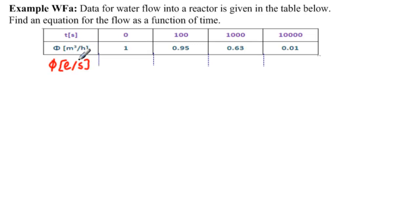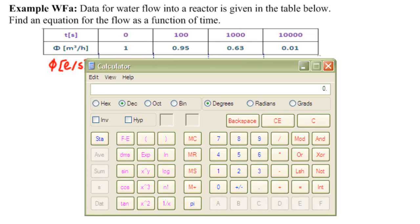Meters cubed per hour to liters per second, we need to multiply by 1,000 and divide by 3,600. Let's bring up a calculator. So we're multiplying by 1,000 to get to liters and dividing by 3,600 seconds to get to seconds.